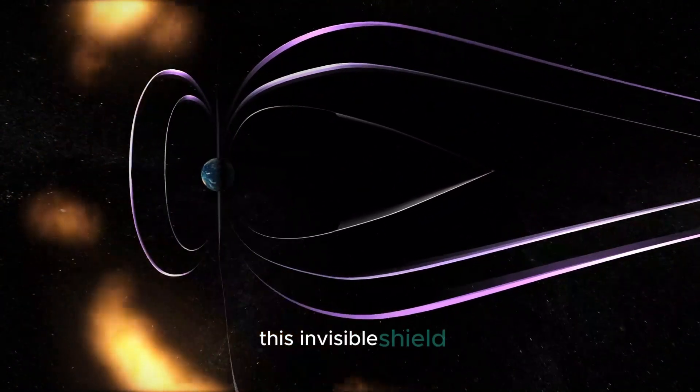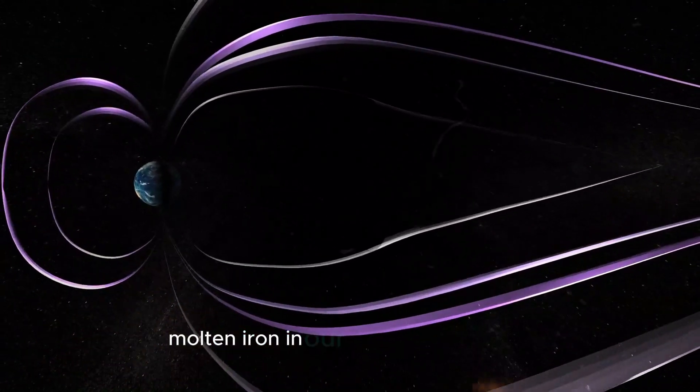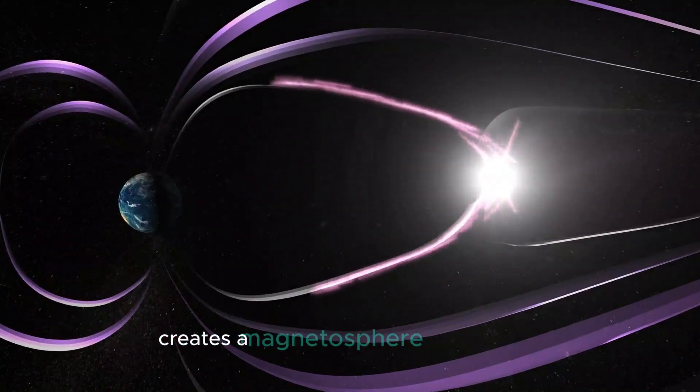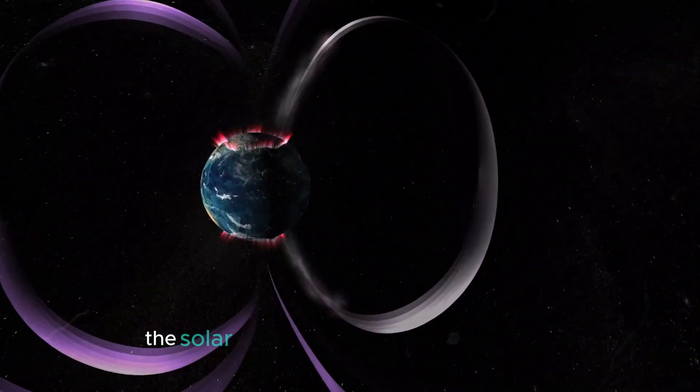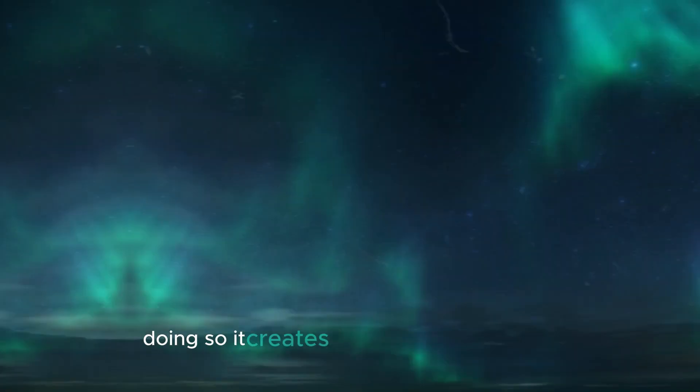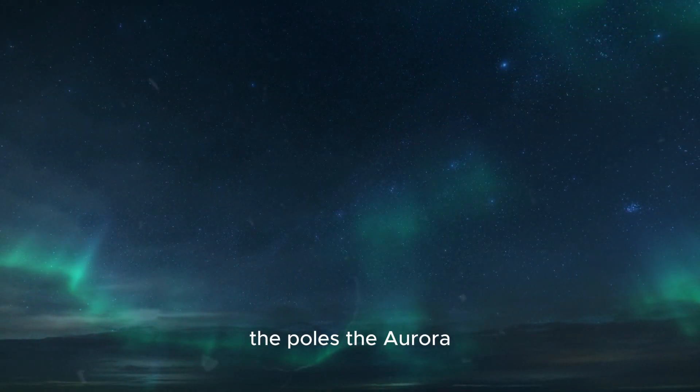This invisible shield, generated by the churning molten iron in our planet's outer core, creates a magnetosphere around Earth, deflecting most of the charged particles in the solar wind away from our atmosphere. Doing so, it creates a beautiful spectacle at the poles, the aurora.